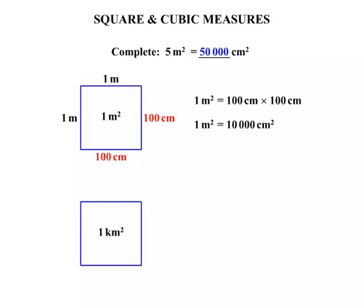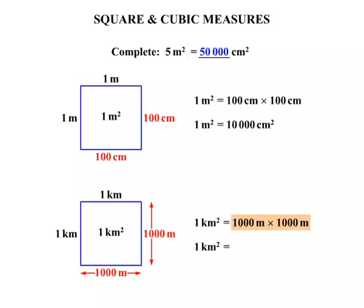A similar idea occurs when we have 1 kilometre squared. Well, that is 1 kilometre by 1 kilometre. But in terms of metres we can write that as 1,000 metres long and 1,000 metres wide. So 1 kilometre squared, length times breadth, 1,000 metres times 1,000 metres, works out to be 1,000,000 square metres.